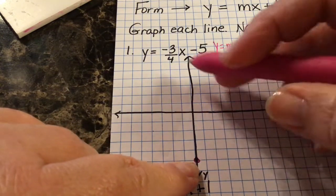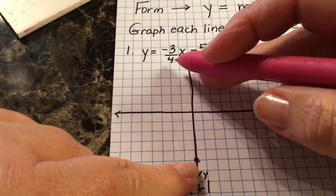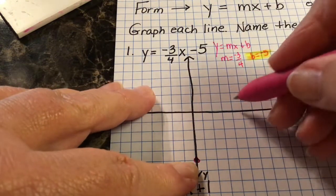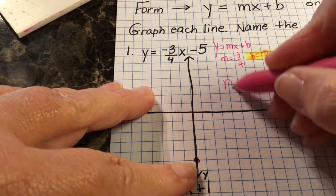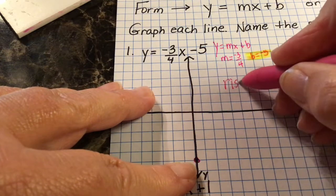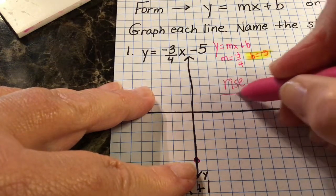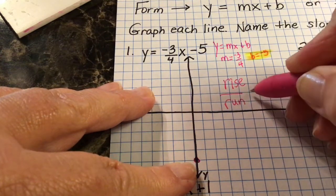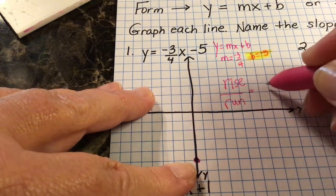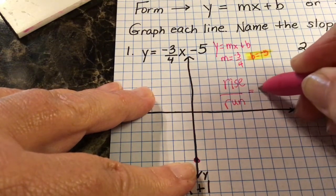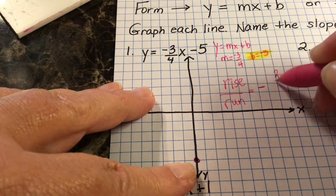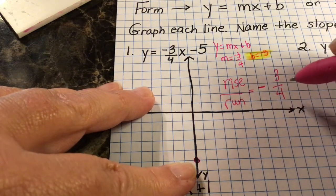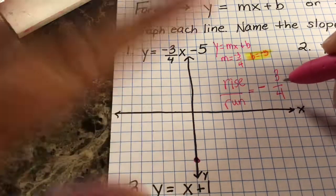Now I need to graph a slope of negative three-fourths. Remember, rise over run is your slope, and we've got negative three-fourths. Different teachers may teach this differently, and that's fine — we all have different learners.